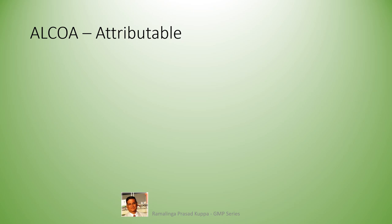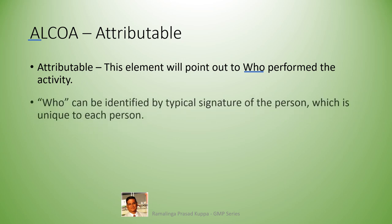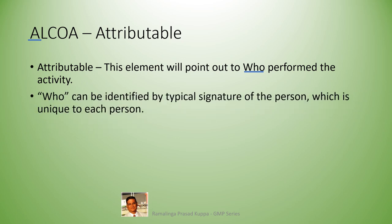Let us learn more about ALCOA. The first letter A is for Attributable — this element will point out who performed the activity. The first thing is to identify the individual who performed the activity. The person responsible for the data recorded can be identified by a typical signature, which is unique to each person. This is one way of identifying the person.